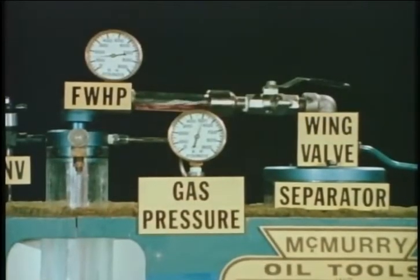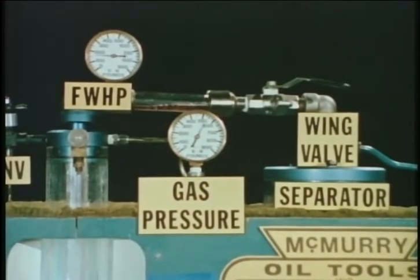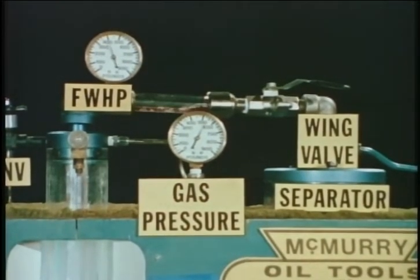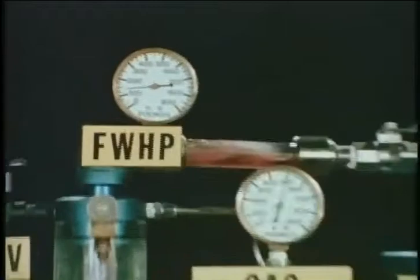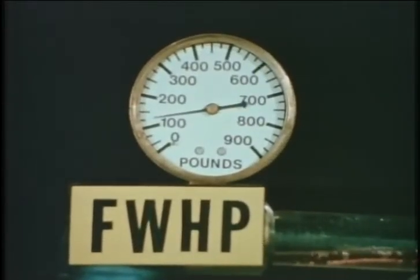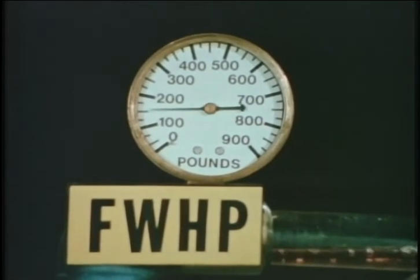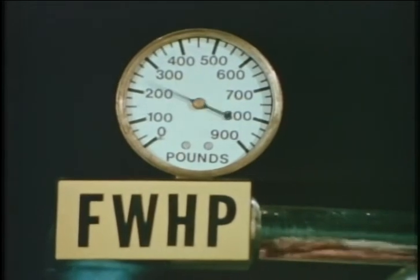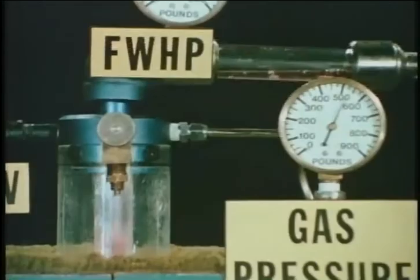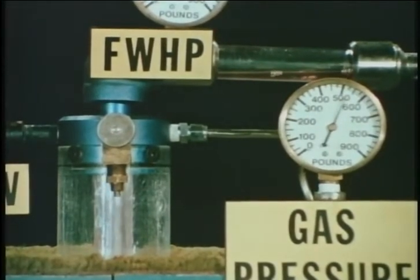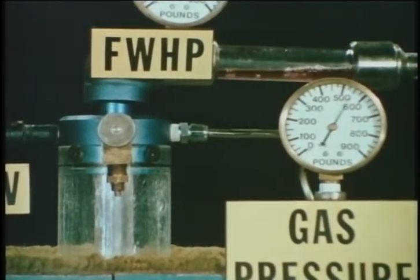Now let's see what happens if a tubing choke is placed in the flowline at the wellhead. Since we do not have a choke body in the flowline, we will partially close the wing valve to produce the same effect. Our pressure gauge is now registering surges of from 100 to 300 PSI, which are much higher than the previous 100 to 130 PSI surges. The higher pressure is caused by the liquid slugs not being able to flow into the surface line quickly enough due to the choke restriction.